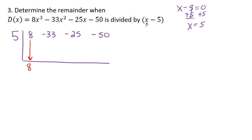Then I'm going to take the 5 and multiply it to the 8 — that's going to give me 40 — and I'm going to put that right here. A positive 5 times a positive 8 is positive 40. Now I'm going to do the math: negative 33 plus 40 is positive 7, so I'm going to put a 7 underneath my L. I'm going to do this process again: 5 times 7 gets me positive 35. Now I'm going to combine the negative 25 and the 35 — that gives me positive 10. I'm going to do the process one more time: 5 times 10 is 50. We're going to combine negative 50 plus 50 — that's 0.